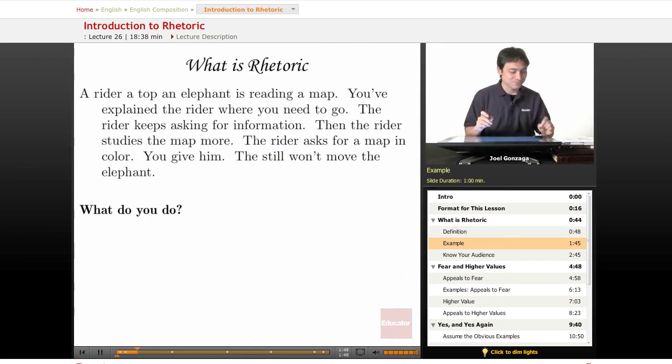Here's an imaginary parable. There is a rider on top of an elephant, and that rider is reading a map. You've explained to this rider where you need to go, why going there is important, and the rider says, 'Well, I just need a little more information before we go anywhere.' So you give that rider more information - instead of just the roadmap, you give them the topography map so they can see where the mountains, hills, and rainforest are.